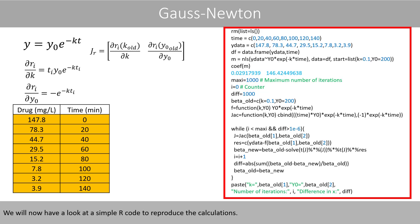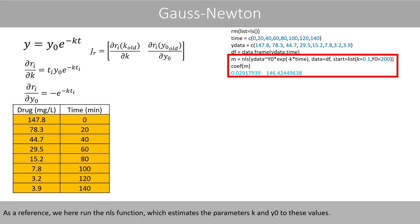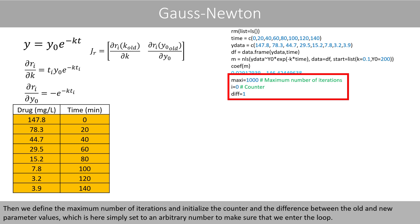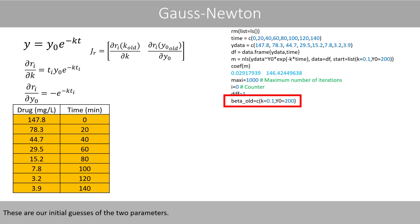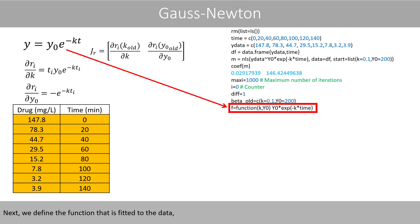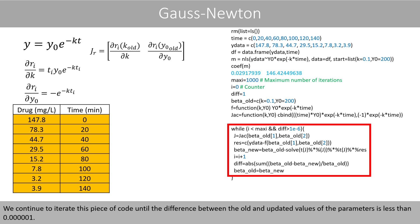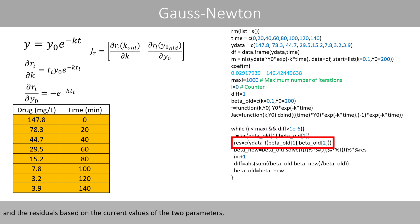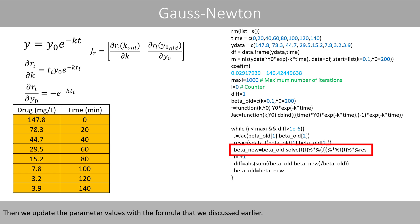We now look at the R code to reproduce the calculations. As a reference, we run the NLS function, which estimates k and y0. We define the maximum number of iterations, initialize the counter and the difference between old and new parameter values — set to an arbitrary number to ensure we enter the loop — and set our initial guesses for the two parameters. We then define the fitted function and the Jacobian matrix, and iterate until the difference between old and updated parameter values is less than 0.0000001. Inside the loop, we compute the Jacobian and residuals based on current parameter values, then update parameters using the Gauss-Newton formula.